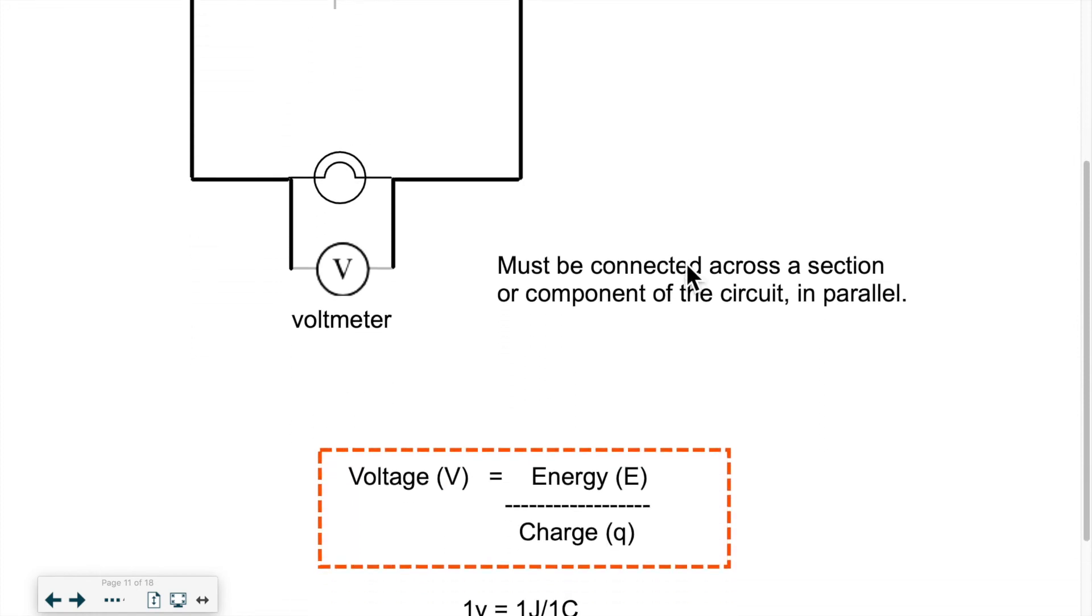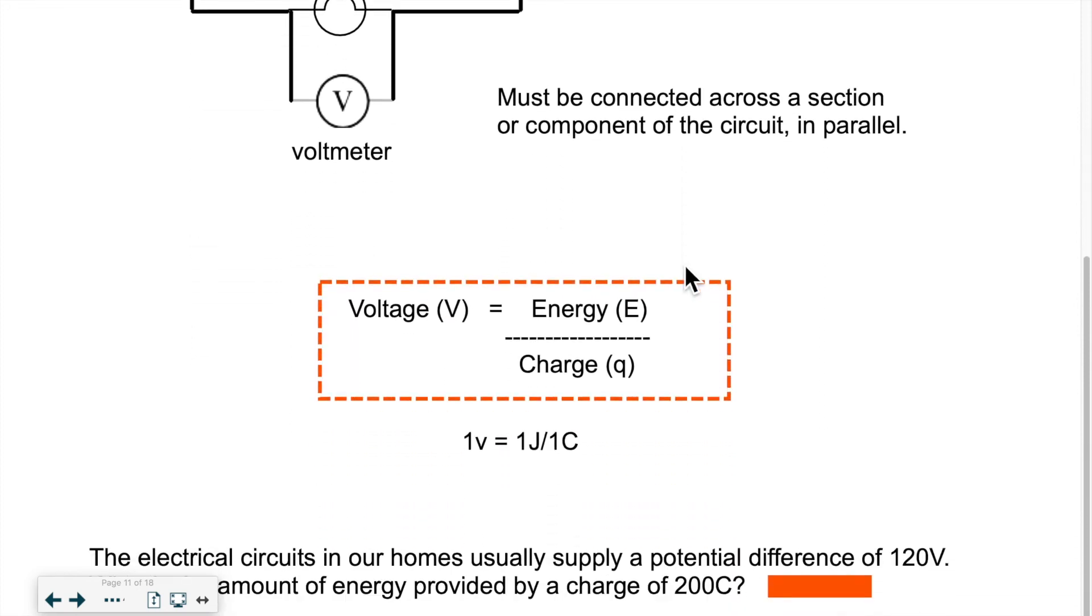Mathematically, this is how it looks. Voltage, capital V, is equal to the energy spent per charge. If you have more charges being studied, you'll have more energy involved. If we look at the corresponding units, we'll have one volt is equal to one joule, energy is expressed always in joules, over one coulomb of charges.